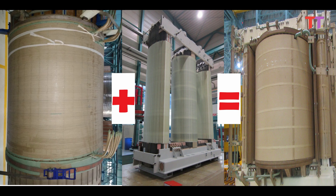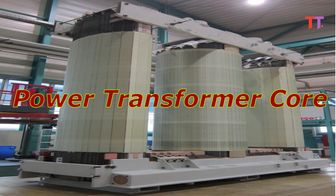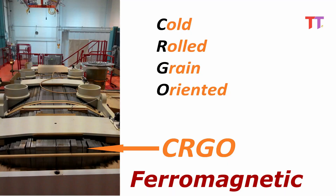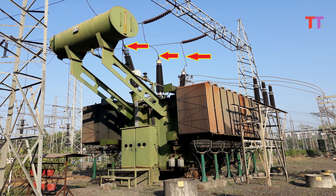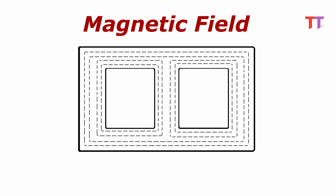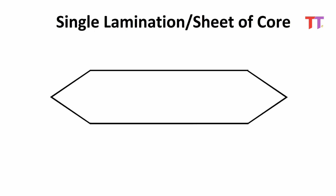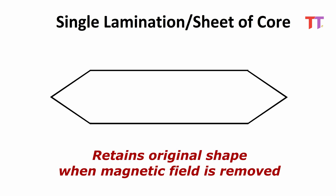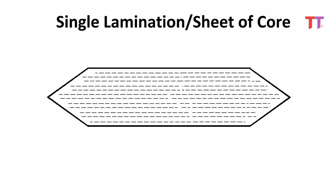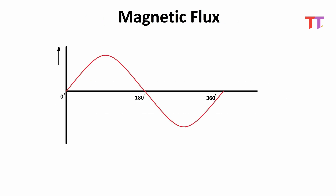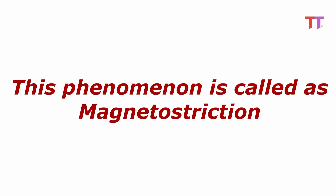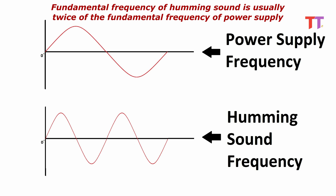As we have seen in one of the previous videos on manufacturing a power transformer, the transformer core is made of CRGO, called Cold Rolled Grain Oriented, which is ferromagnetic. When the transformer is charged — that is, when AC power is given — a magnetic field is produced which causes the core to change its shape. The core extends itself when exposed to a magnetic field and retains its original shape when the magnetic field is removed. Hence, the core continuously extends and retains its shape with flux variation. These shape variations cause vibrations and consequently the humming sound. This phenomenon is called magnetostriction.